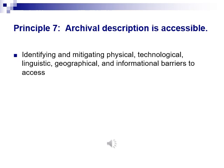Principle seven acknowledges that user-centered description must reach the intended user and convey the needed information, proactively seeking to mitigate physical, technological, linguistic, geographical, and informational barriers for equitable discovery and access.